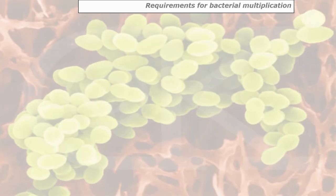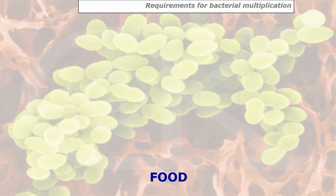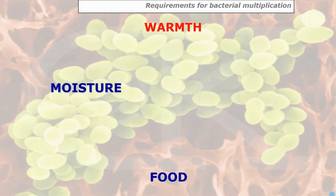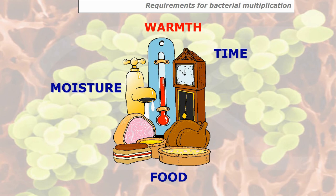Requirements for bacterial multiplication: bacteria, very much like us, need certain things in order to grow. You need food, moisture, warmth and time. It's like a jigsaw — if all four elements come together you will get bacteria growing and eventually causing food poisoning.